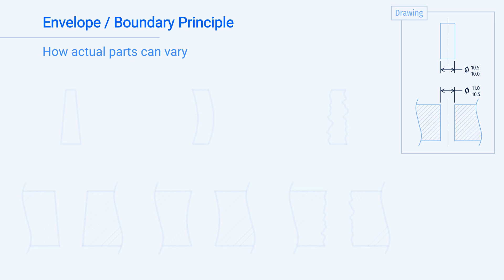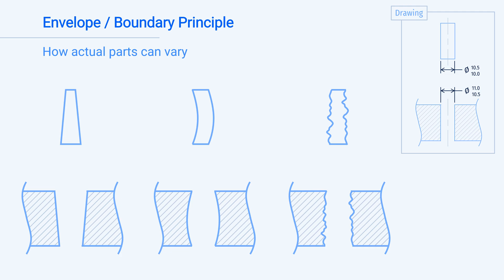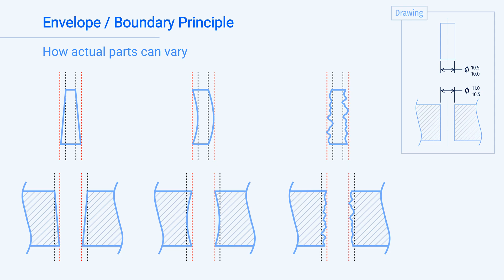Actual parts that are manufactured can vary in any way. To show the limits we will draw in red dotted lines to represent MMC and black dotted lines to represent LMC.